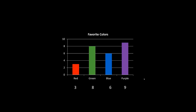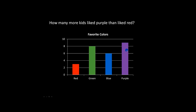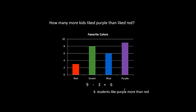Now I have a couple of questions that are typical questions we would ask about bar graphs. First question: how many more kids liked purple than liked red? We know there are nine students who liked purple and three students who liked red. We're finding the difference between nine and three, and when we look for the difference we subtract. Nine take away three is six, so six more students liked purple than red.